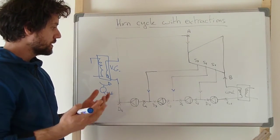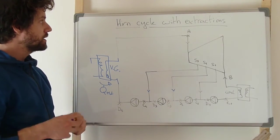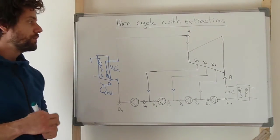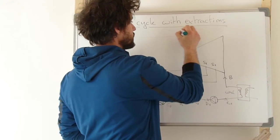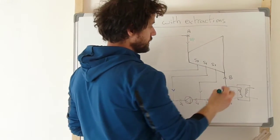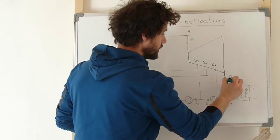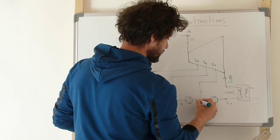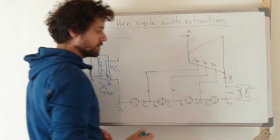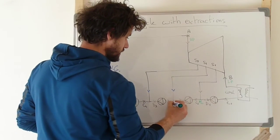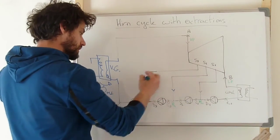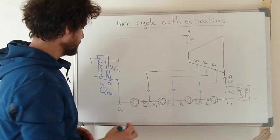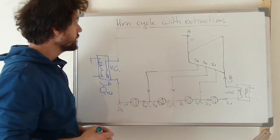So that is the working principle of the Hirn cycle with extractions. We can add pressure labels to the schematic: high pressure at the inlet of the turbine, low pressure at the outlet, and on the three lines connecting the S1 extraction we have the pressure of S1, on the three lines for S2 we have the pressure of S2, and on the three lines for S3 we have the pressure of S3. After the last pump we have again the high pressure of the cycle.